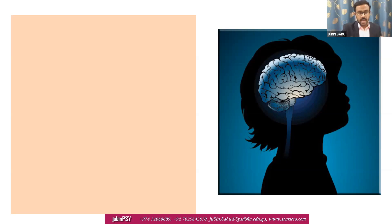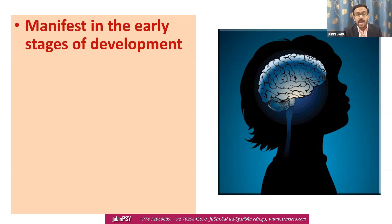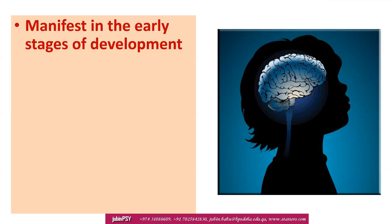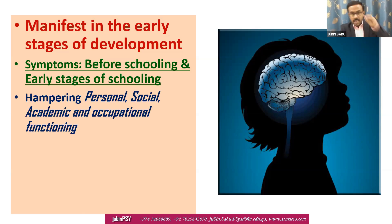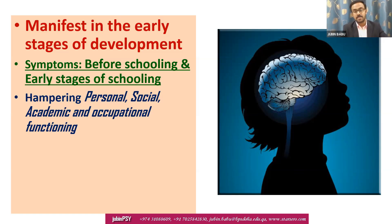Let us go through these important characteristics one by one. The first and primary characteristic is that it manifests in the early stages of development. When the person is a child, symptoms and signs are clearly seen and will appear before schooling or in the early stages of schooling. If a child has neurodevelopmental disorders, they will have problems — it may hamper their personal, social, academic, and occupational functioning.